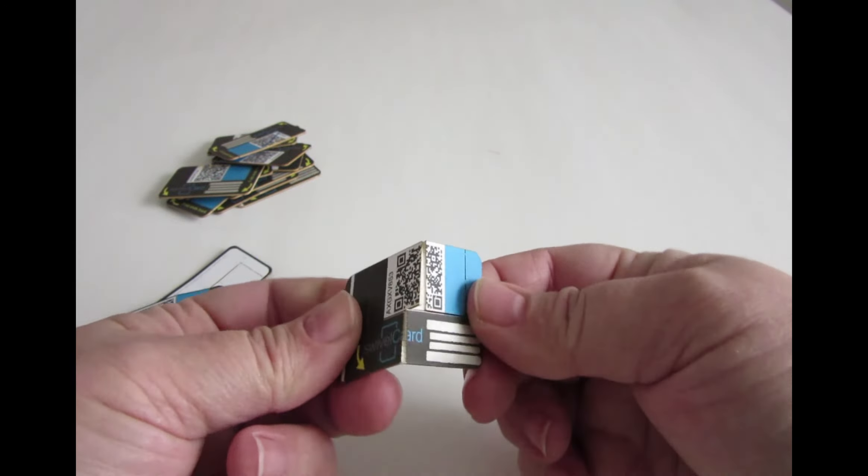Now let's do it the wrong way a few times just to see what happens. Here's one that's completely flat, and I'm just going to grab it and bend. Okay, you can see what happened there. It just tore right across the middle, and now it's still going to